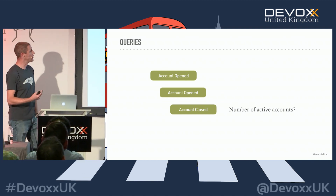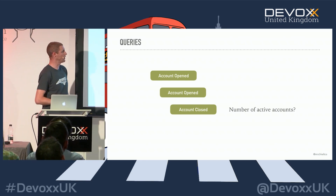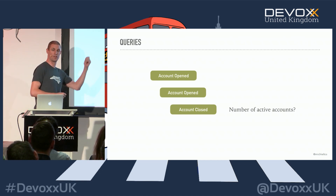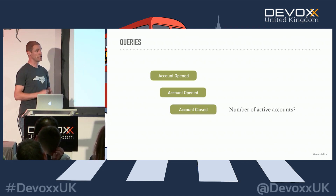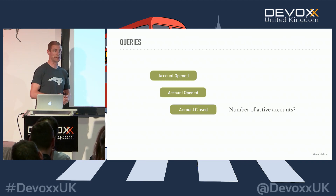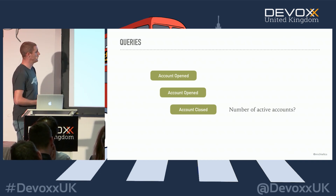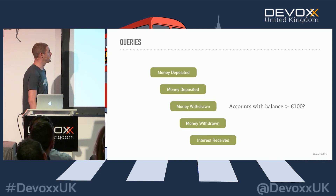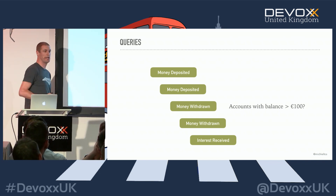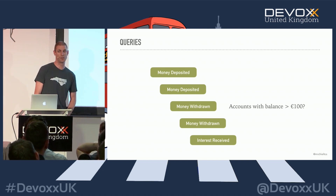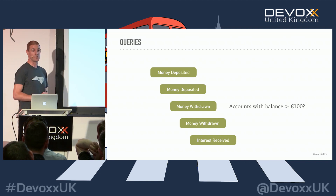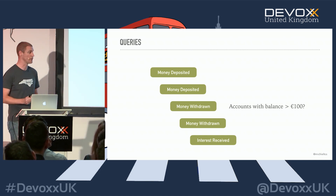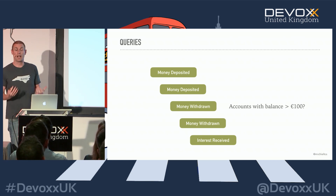For example, with account opened and account closed events, if someone asks for the number of active accounts, we count account opened events, count account closed events, subtract the two — simple. But if we add money deposited, money withdrawn, and interest received events, and the query becomes 'list all accounts with a balance over 100 euros,' that's difficult to query directly from the transaction log. It will most certainly be slow if you have a lot of transactions.